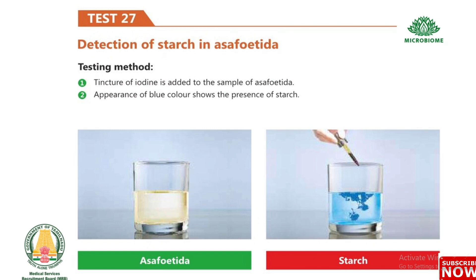Test 27: Detection of starch in asafoetida. Tincture of iodine is added to the sample of asafoetida. Appearance of blue color shows the presence of starch.